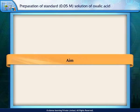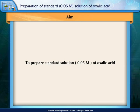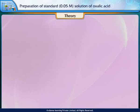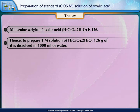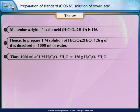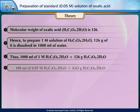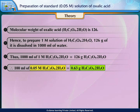Our aim is to prepare a standard 0.05 molar solution of oxalic acid. The molecular weight of oxalic acid is 126. To prepare a 1 molar solution, 126 grams is dissolved in 1000 ml of water. Therefore, 100 ml of 0.05 molar oxalic acid is equivalent to 0.63 grams of oxalic acid.